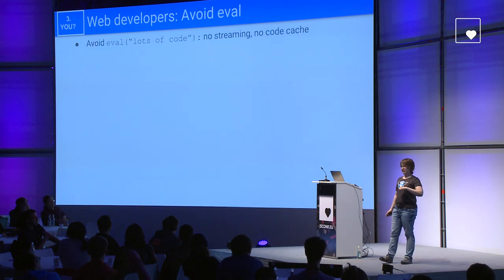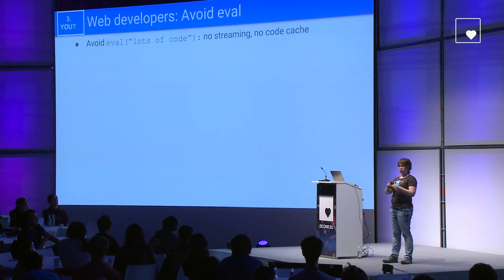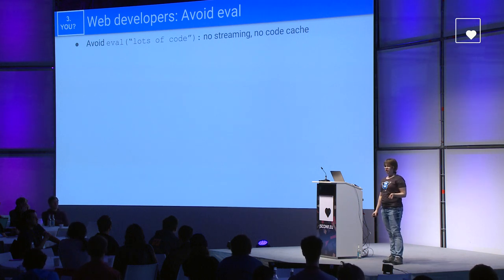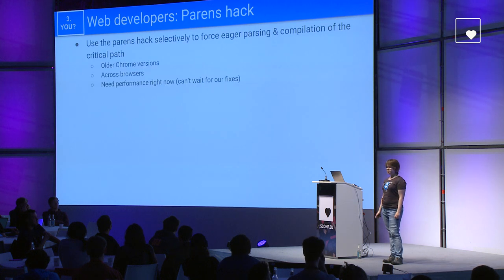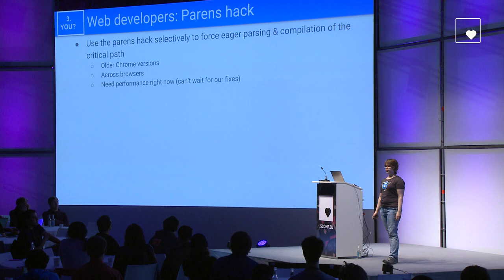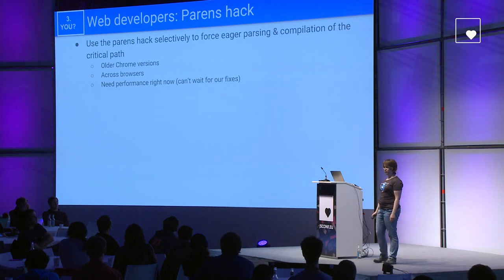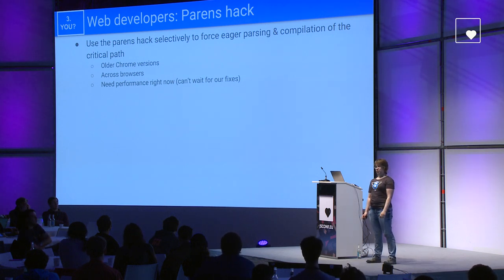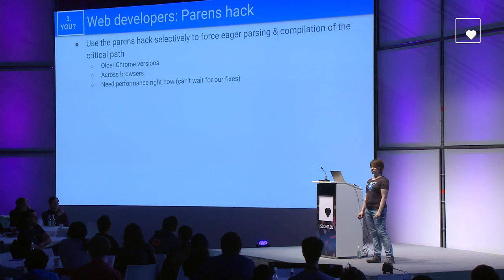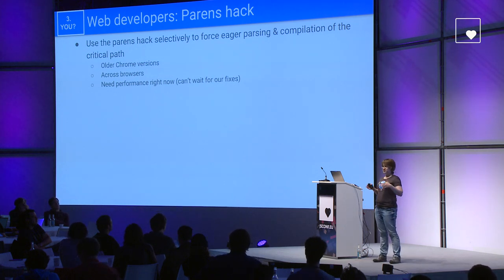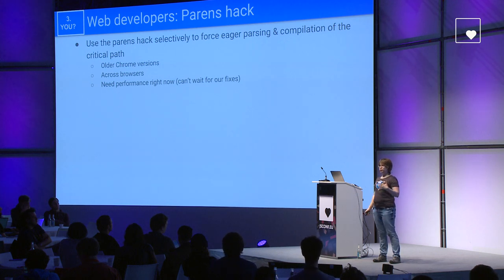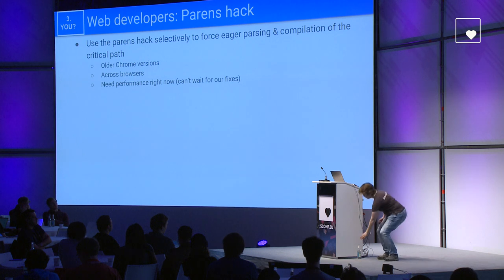There is very little we can do for eval, so there won't be streaming or code caching for that — it makes sense to avoid evaling big chunks of code if you can. In some situations it makes sense to use the parens hack to force eager parsing and compilation of the critical path in your code. This makes sense if you need to support older Chrome versions, need performance across browsers, or need performance right now and can't wait for us to fix our code. But we are working on making this hack less and less relevant in the future.